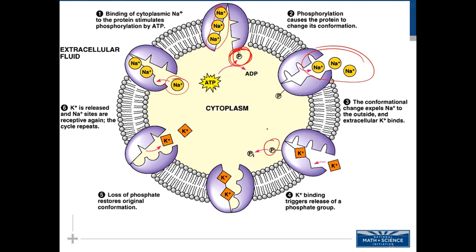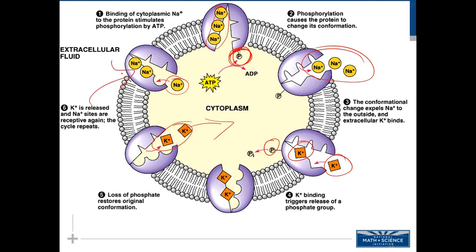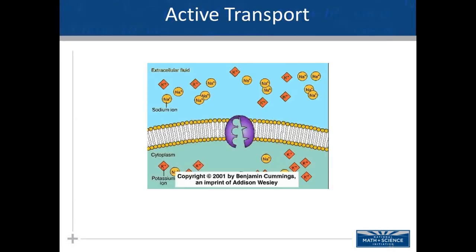When the protein carrier changes shape, it favors the removal of the sodium ions and the detachment of the phosphate group. In this new shape, it favors the binding of two potassium ions. When the two potassium ions attach, the protein becomes unstable again and returns to shape number one, which causes the potassium ions to be released. The whole process starts over — it's like a little pump, with the protein changing from conformation one to conformation two.